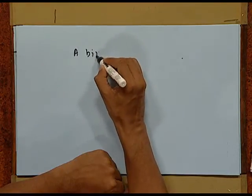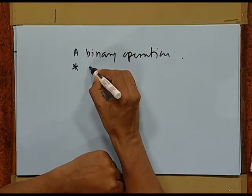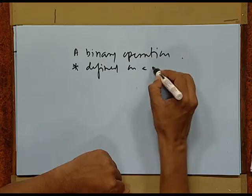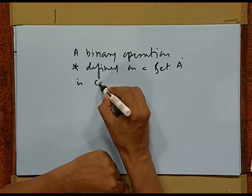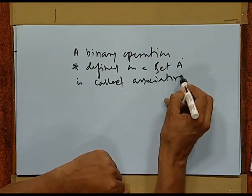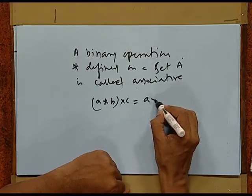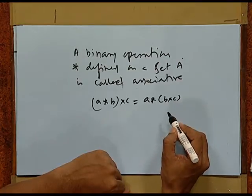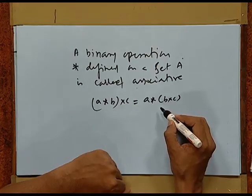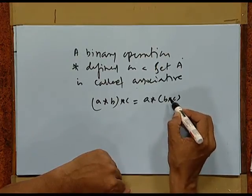There is one more kind of operation called associative. A binary operation star defined on a set A is called associative if (A star B) star C is equal to A star (B star C). Here the bracket is first with A and B; in the second case it is B and C. If both of these give the same result, we say the operation is associative. Our operations — usually addition and multiplication — follow this law, but even in life this law is not always followed.